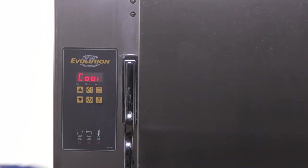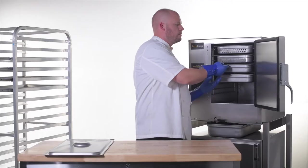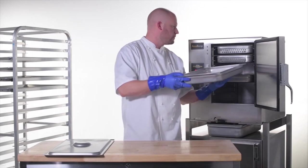At the end of the cook cycle, the Evolution steamer will buzz to let you know that it is done cooking your products. Simply press the timer button to stop the buzzer, and then remove food or place into hold mode.